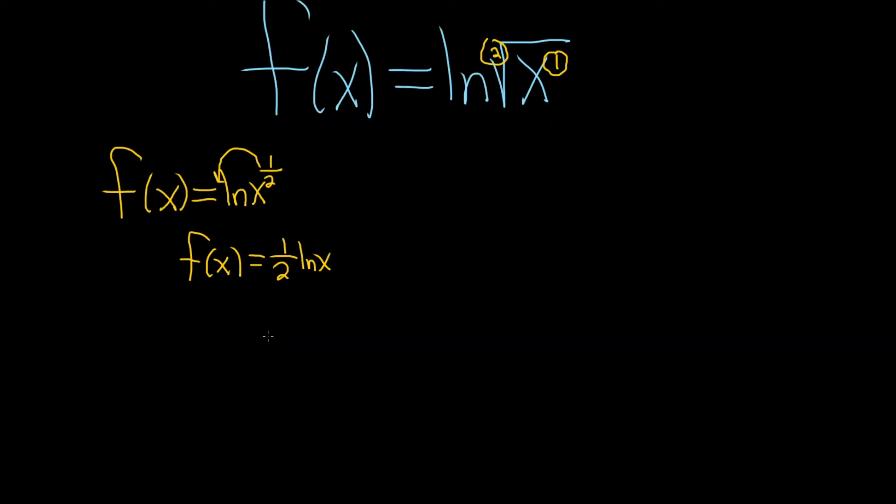Now we're going to take the derivative. So f prime of x. I don't know why it got bigger. So the 1 half hangs out because it's in front of a function of x. And then we just multiply by the derivative of the natural log of x. Well, what is that? That's just 1 over x.